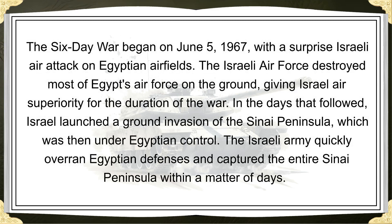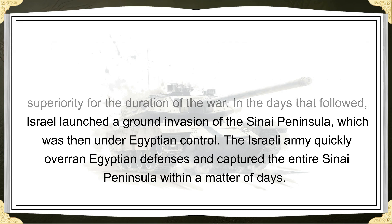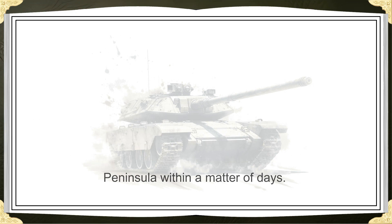The Six-Day War began on June 5, 1967, with a surprise Israeli air attack on Egyptian airfields. The Israeli air force destroyed most of Egypt's air force on the ground, giving Israel air superiority for the duration of the war. In the days that followed, Israel launched a ground invasion of the Sinai Peninsula, which was then under Egyptian control. The Israeli army quickly overran Egyptian defenses and captured the entire Sinai Peninsula within a matter of days.